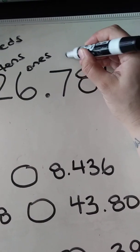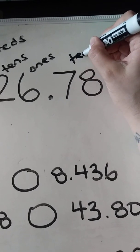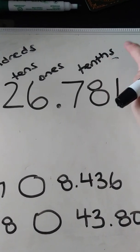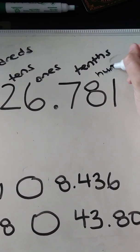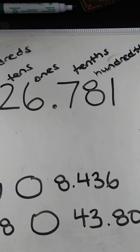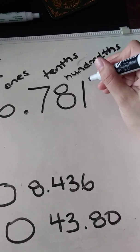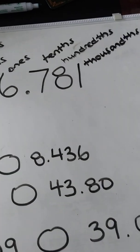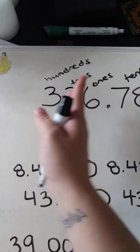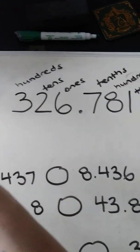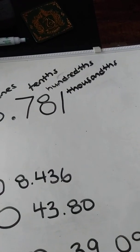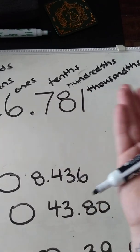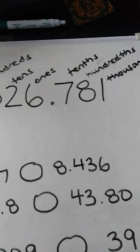We have the tenths place. Tenths — it's really important. Then we have the hundredths, and then we have the thousandths. Of course, just like going this way the number can go on forever and ever. Just like going this way it can go on forever as well. But for our purposes in elementary school, we really only talk about tenths, hundredths, and thousandths. So that's what we're going to use today in our comparison.